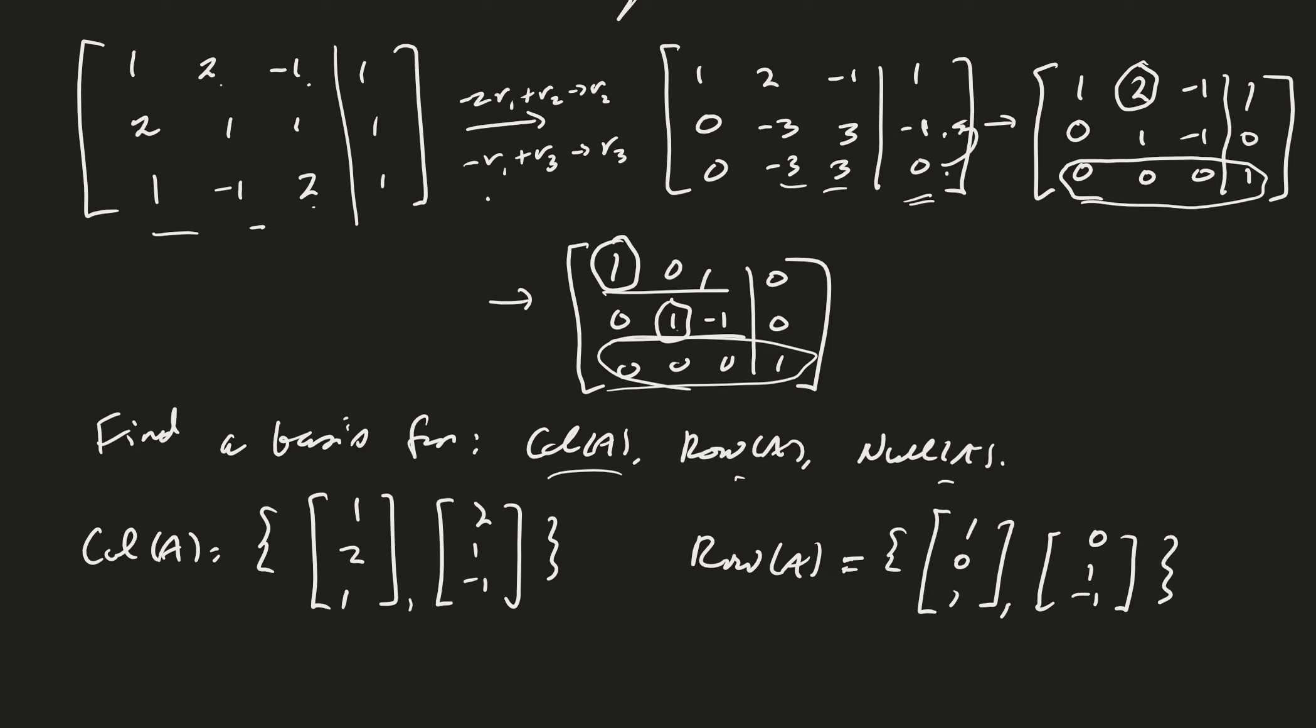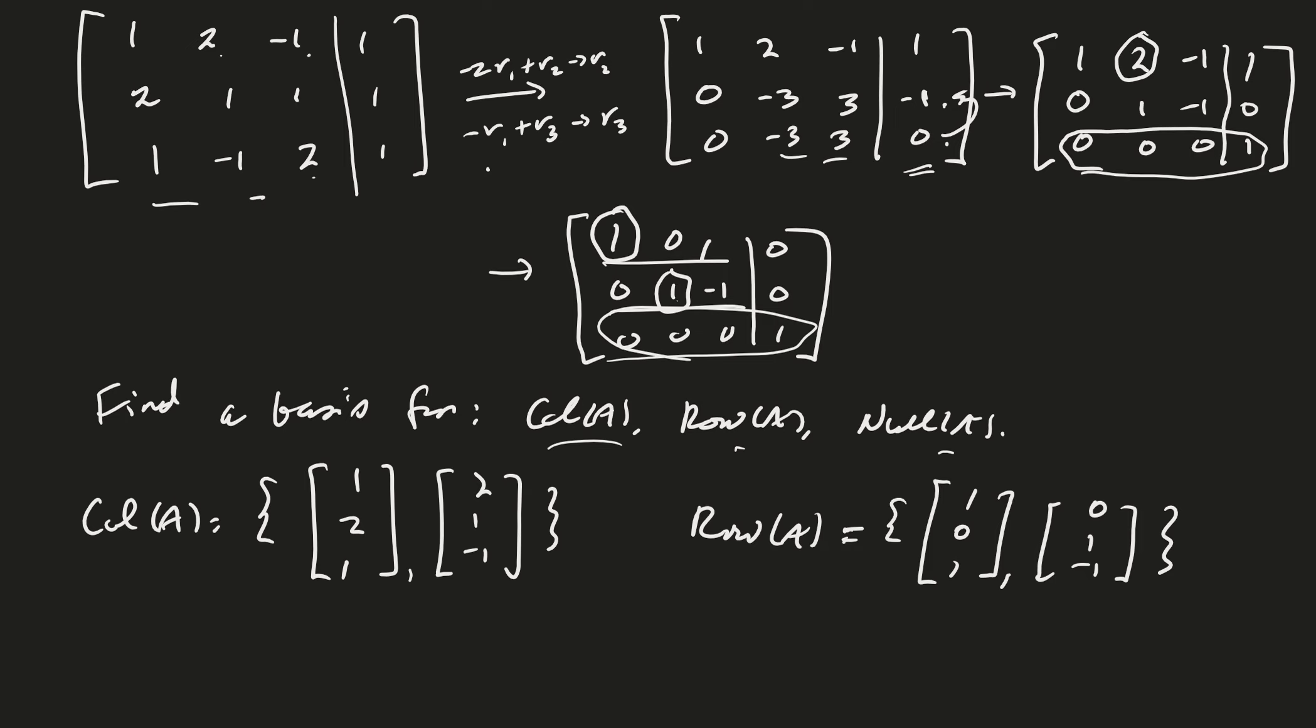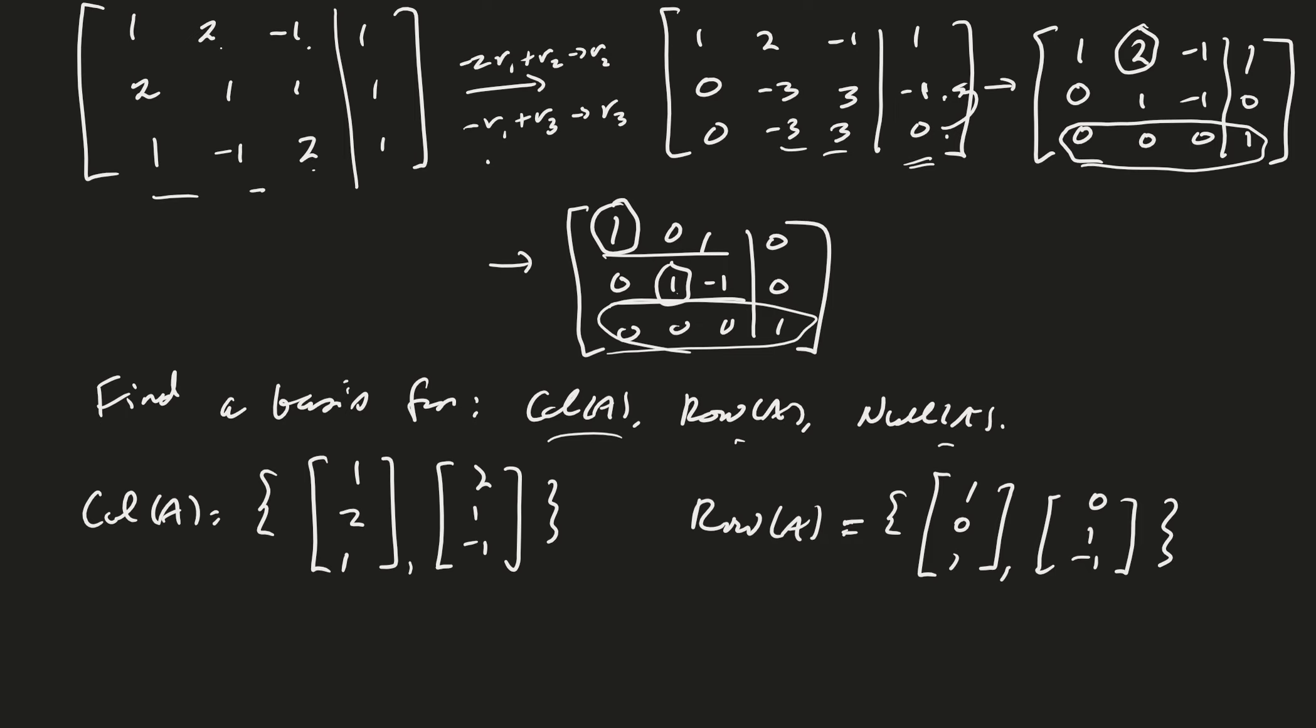Okay. And so, you see, by the way, that the dimension of the row space and the dimension of the column space are the same. And that is true all the time. And so, how about the null space of A? Well, we have to solve Ax equals 0.